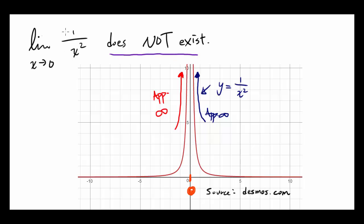Some people will say that the limit as x approaches 0 of 1 over x squared is equal to positive infinity, because you are increasing without bound. But denoting it this way does not mean the limit exists. It's just a notation for saying there is no bound — the function is increasing without bound as you get closer and closer to 0.